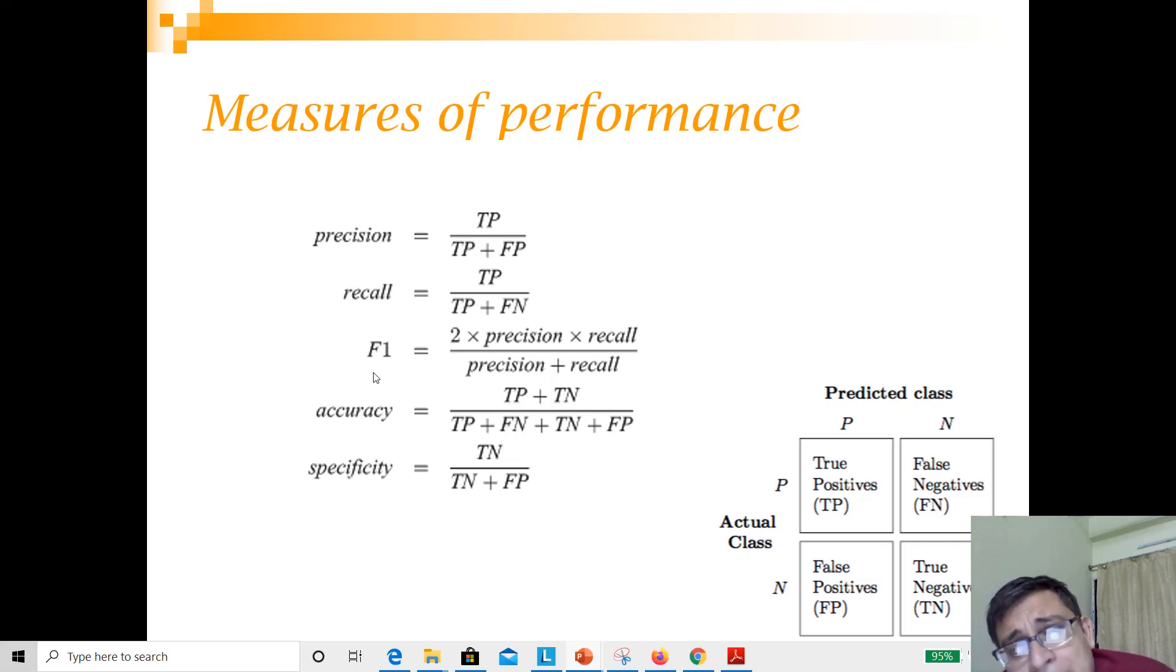There is another terminology called specificity. Specificity is like the accuracy of the negative class - how many classes were actually negative and how many of them you could identify correctly as negative. Recall also has a name called sensitivity. This typically covers all the performance measures for evaluating a classifier. In the next class, we will discuss how to evaluate the performance of a regressor as well as clustering.